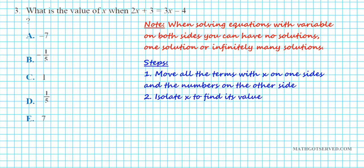Let's take a look at problem number 3: what is the value of x when 2x plus 3 equals 3x minus 4? When solving algebraic equations with variables on both sides, you can have no solutions, one solution, or infinitely many solutions. A false statement like 2 equals 5 means no solution; x equals a number means one solution; an always-true statement like 10 equals 10 means infinitely many solutions. We'll move all variables to one side and numbers to the other to isolate x.